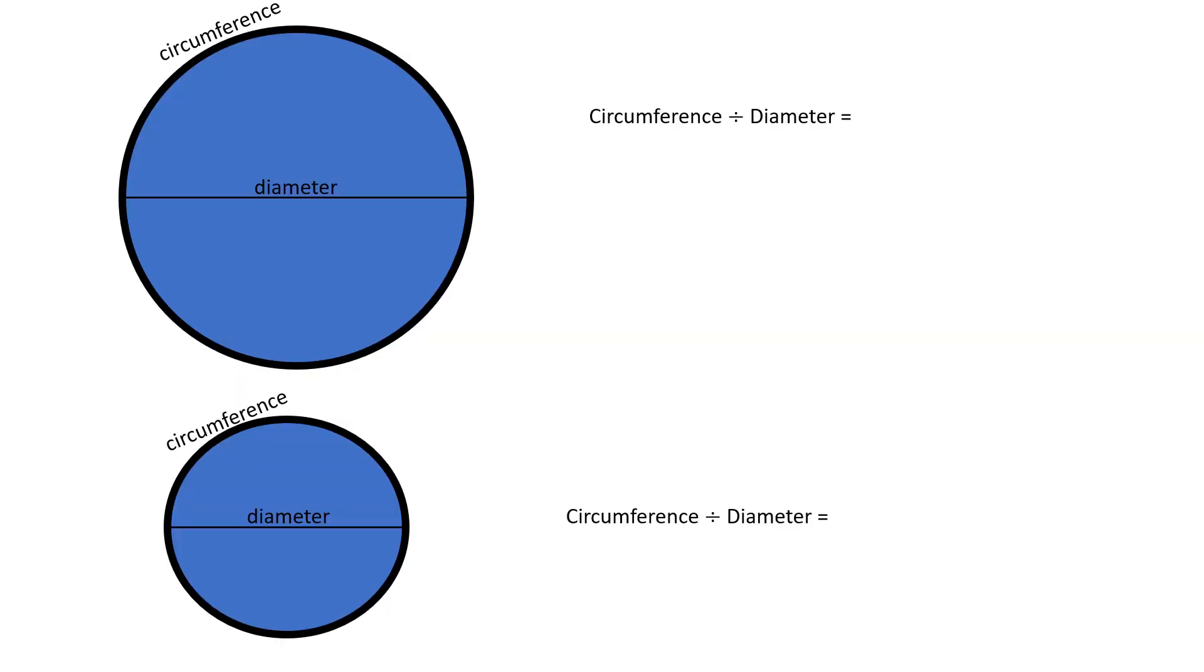We're going to start with talking about circumference and diameter. Diameter is the length from one side to the next, and it has to cross through this center point. The circumference is the length all the way around. This black line, or I'm drawing a red circle, the length all the way around. That is the circumference.